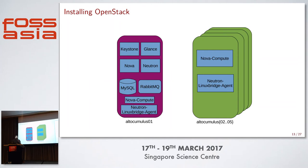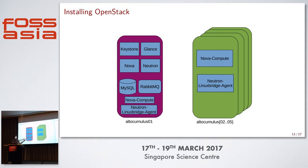After reading the install guide, I decided how to install the different services on my five servers, which I named Alto Cumulus — because I have OCD and think clouds should be named after cloud types. I set up four dedicated compute nodes (Alto Cumulus 2 through 5) running just the Nova compute service and the Neutron Linux Bridge agent. Then I set up a controller node that also doubles as a compute node, running all of the API servers, the database, the message queue, plus Nova compute and a Neutron Linux Bridge agent.